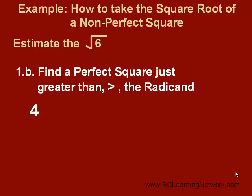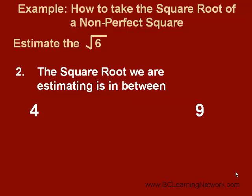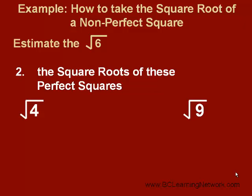Next, we need to find a perfect square just greater than the radicand. So, what perfect square is just larger than 6? The answer is 9. Now, we know that the square root of 6 is somewhere in between the square root of 4 and the square root of 9. Root 6 is greater than the square root of 4 and less than the square root of 9.